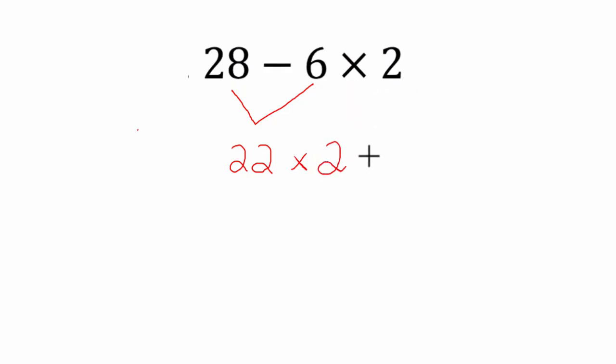In that case you would get 44. But the order of operations tells us that we need to multiply before we add or subtract. So I'm going to clear this off, and with that in mind I'm going to multiply first.